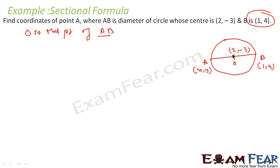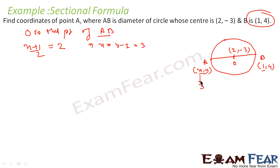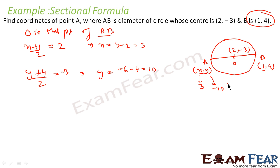We know that O is the midpoint of AB. Computing the x-coordinate: (x + 1)/2 = 2, so x = 4 − 1 = 3. Similarly, computing the y-coordinate: (y + 4)/2 = −3, so y = −6 − 4 = −10. Thus the coordinates of point A are (3, −10), and that is our answer.